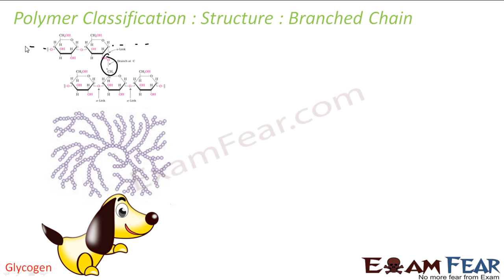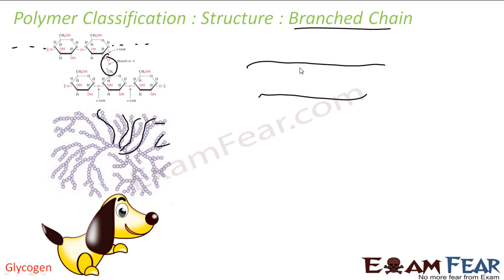So there is a long main chain, but then we have a few branches here and there. The long chain has some branches coming off it. Examples of branched chain polymers include glycogen and low-density polythene (LDPE).